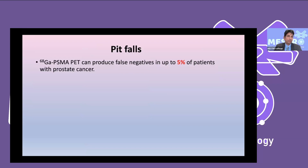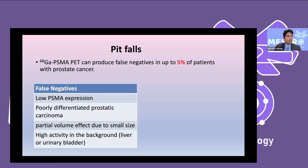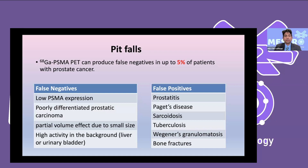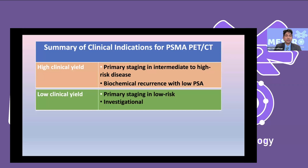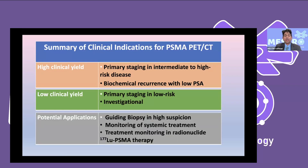There are some pitfalls: approximately 5% of prostate cancers have low PSMA expression and can be PSMA-negative, and false positives can occur in sarcoidosis and tuberculosis. In summary, PSMA PET-CT is useful in intermediate to high risk disease, has very good yield in biochemical recurrence even at low PSA levels, and has low yield in low-risk disease. Potential applications include guiding biopsy, monitoring therapy, assessing treatment response, and determining eligibility for lutetium-PSMA therapy.